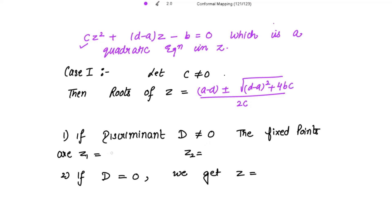The two fixed points are: z₁ equals (a minus d) plus square root of discriminant D, over 2c; and the other fixed point is z₂ equals (a minus d) minus square root of discriminant D, over 2c. These are the fixed points when the discriminant is non-zero and c is non-zero.